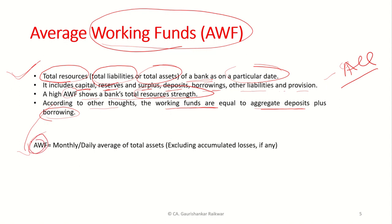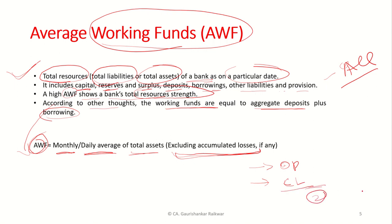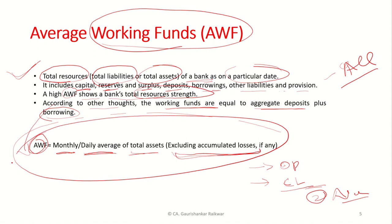Now let's talk about what is the average working capital fund. It is the monthly or daily average of total assets, excluding accumulated losses, if any. Normally when we prepare a balance sheet, we take the opening balance and closing balance and simply divide by two to get the average. But in the case of banks, the calculation of average is different — it is more conservative, more practical, and gives a more real picture. We calculate the monthly or daily average of total assets for the entire year.